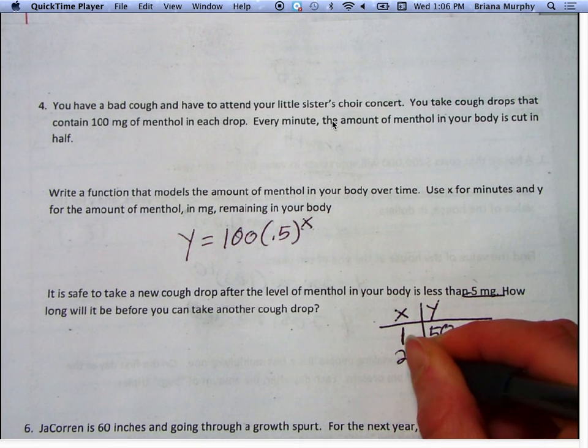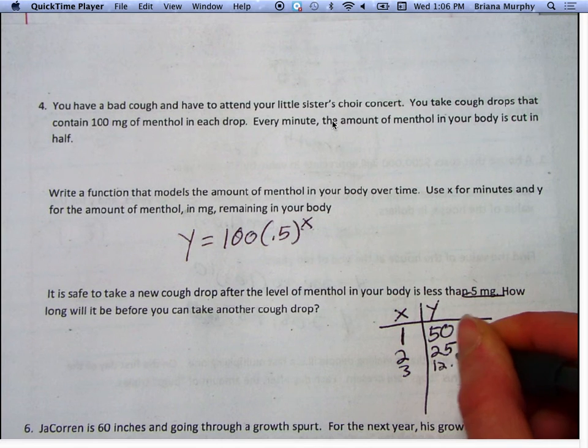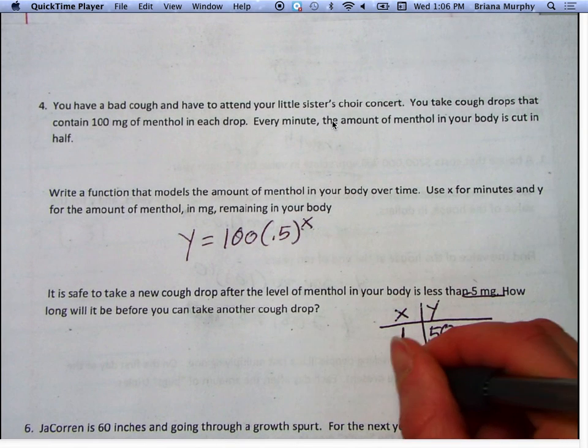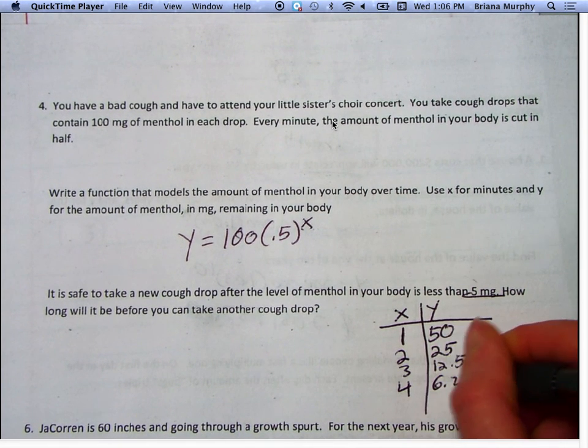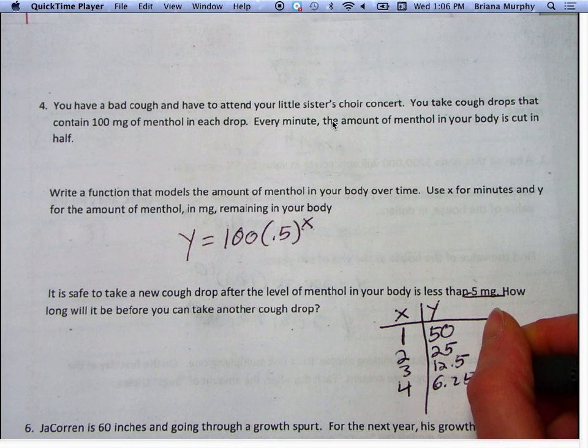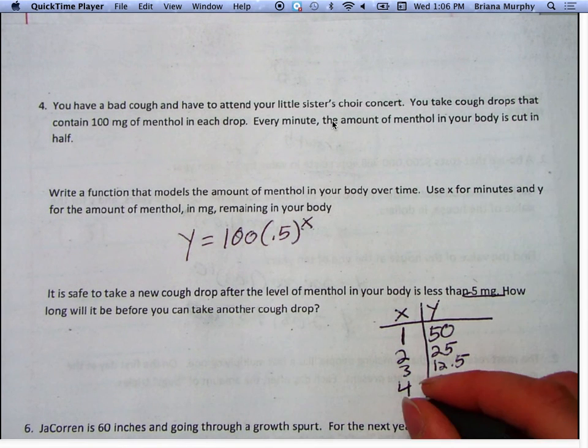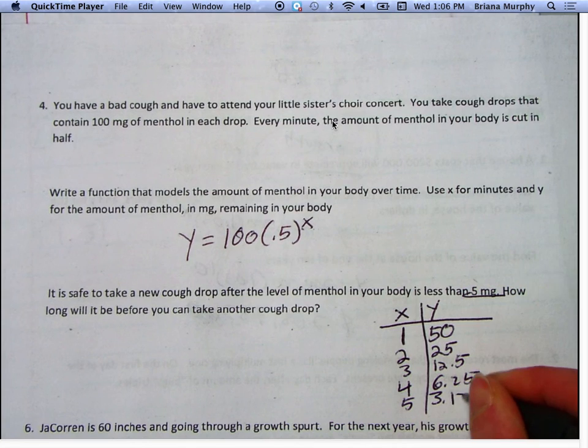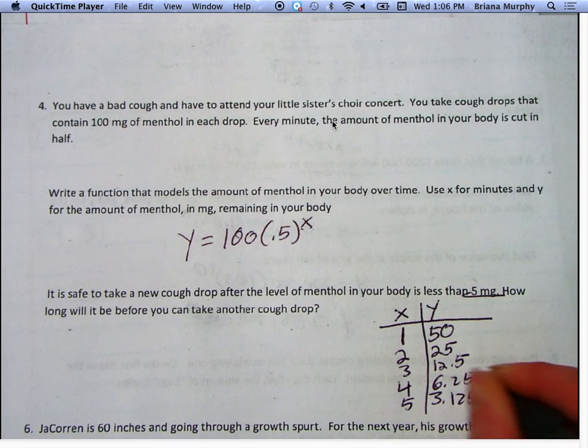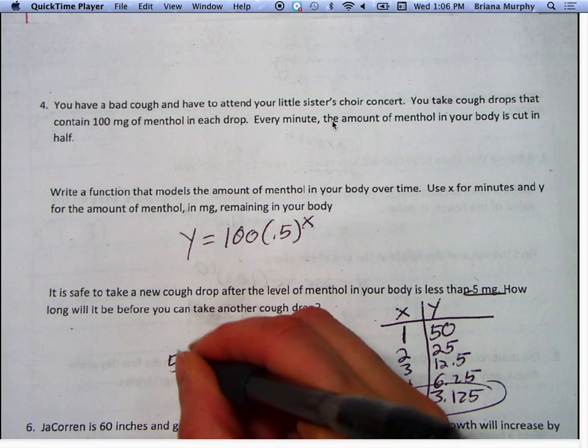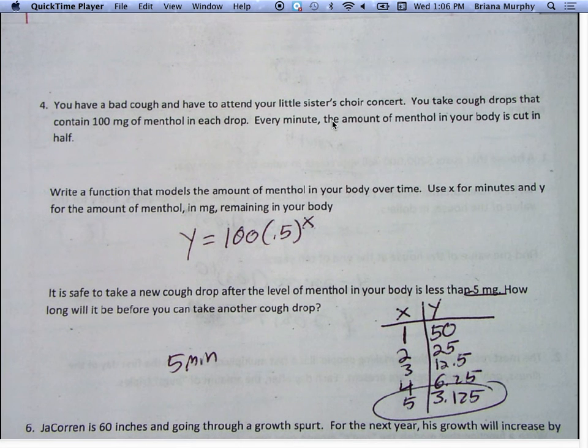After 3 minutes you have 12.5 in your system. After 4 minutes you have 6.25 in your system. At 5 you have 3.125 in your system. So after 5 minutes you can have another cough drop. Second hour I put hours for accident. Who has a cough drop every 5 hours?